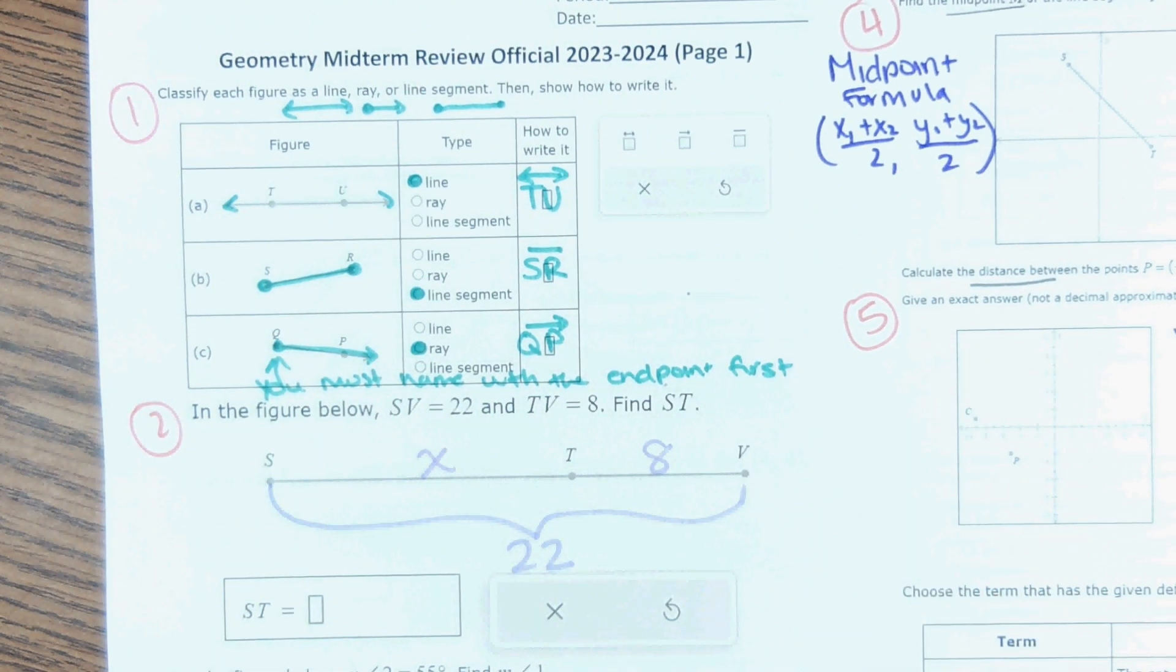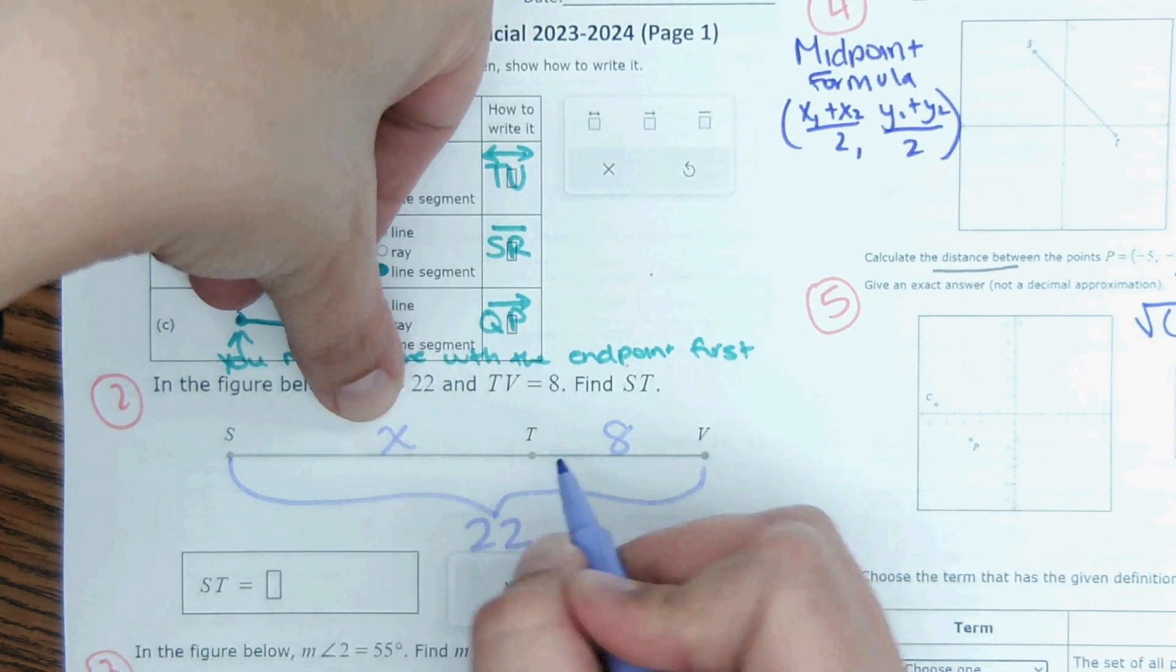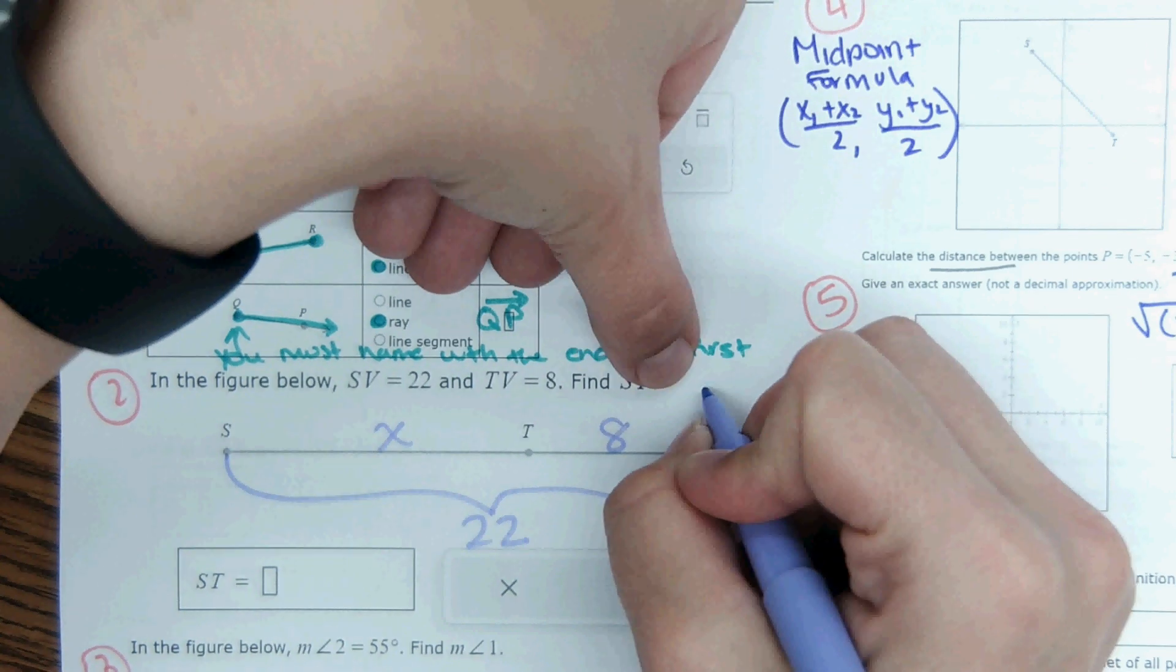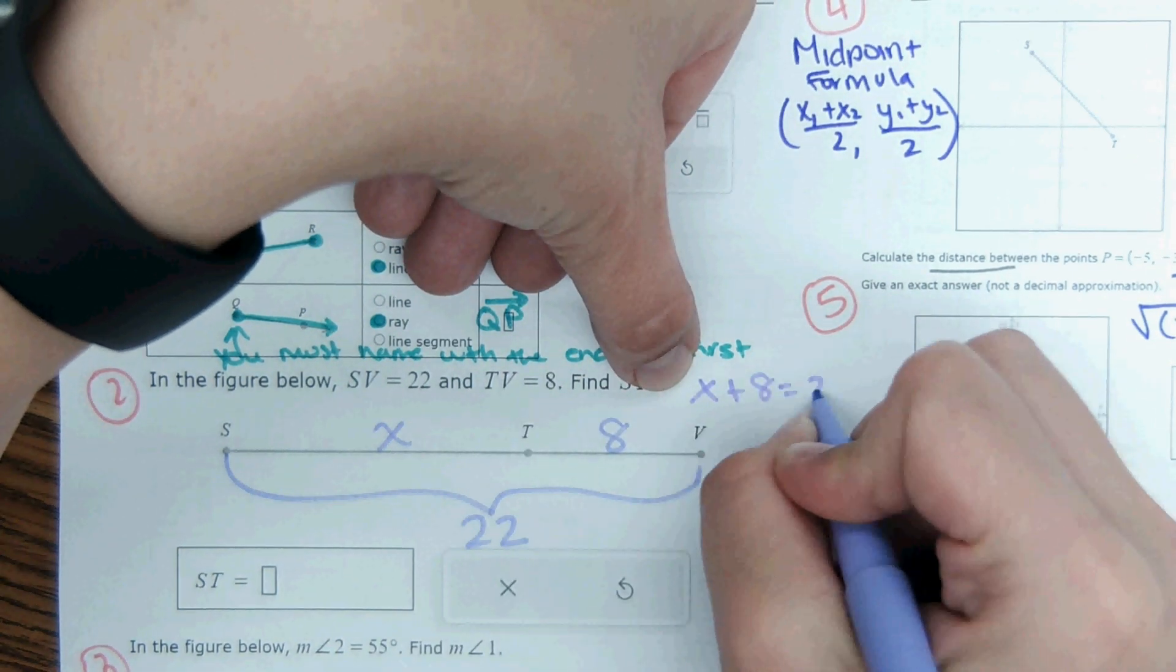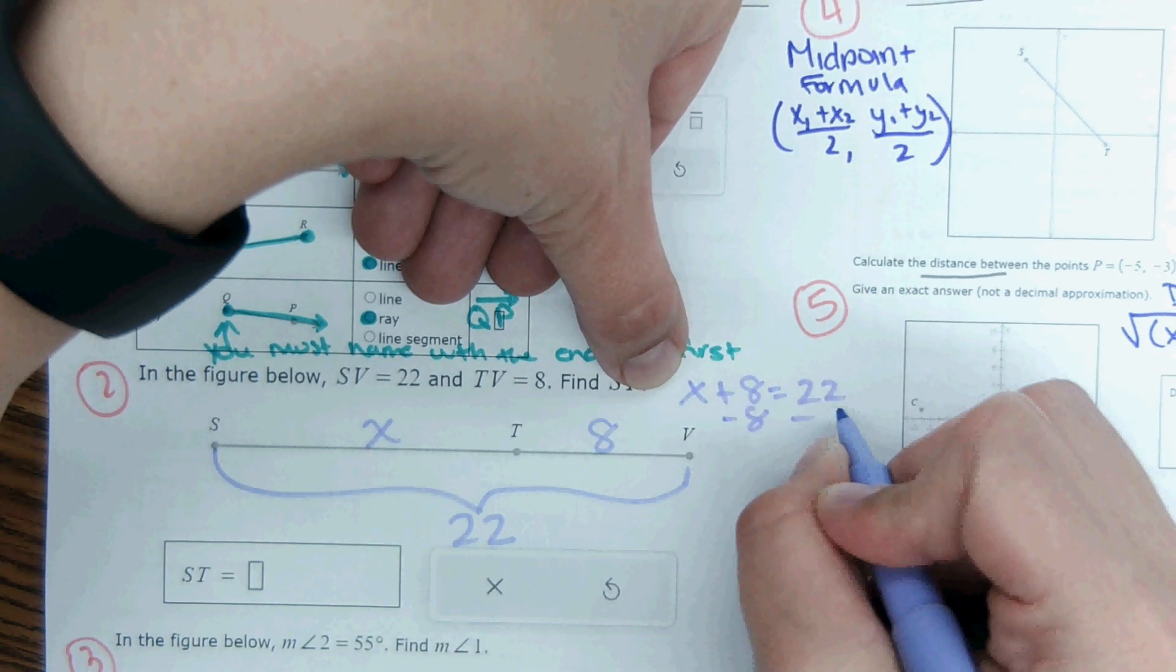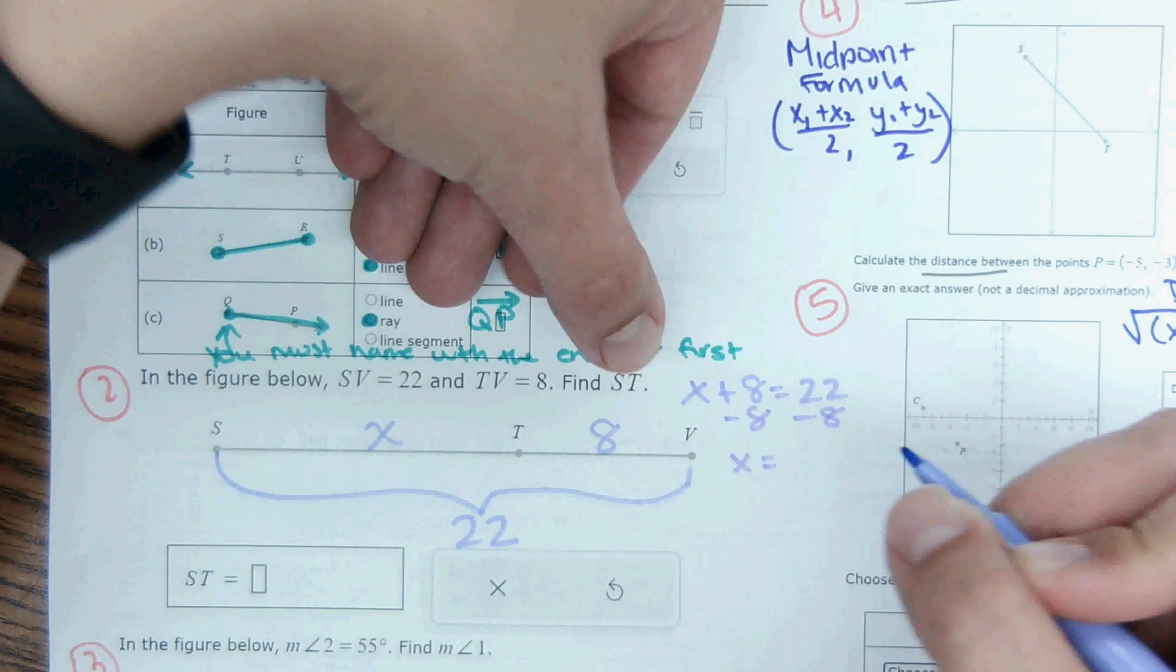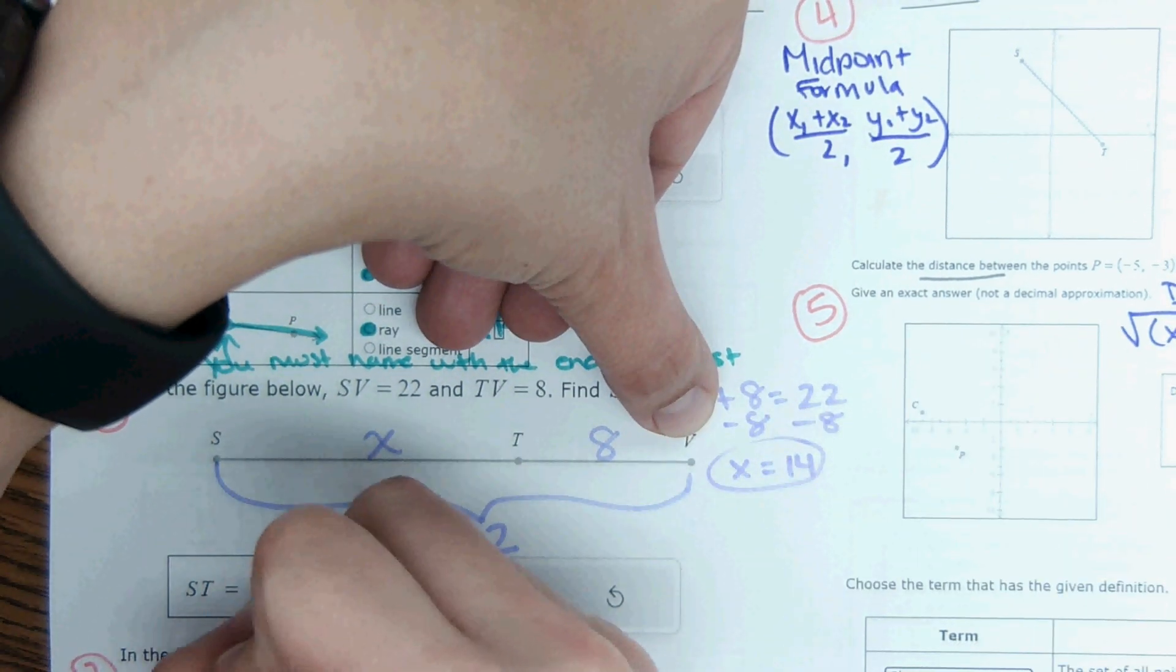Okay, so some of you might just say, oh, just use subtraction. That is correct. You could subtract these two numbers to get this missing length. The other way you could structure it, if you like to see things more in equations, X plus 8 equals 22, and you could solve for X that way. So subtract 8 from both sides and X equals 14. And then this 14, you just put it in the box.